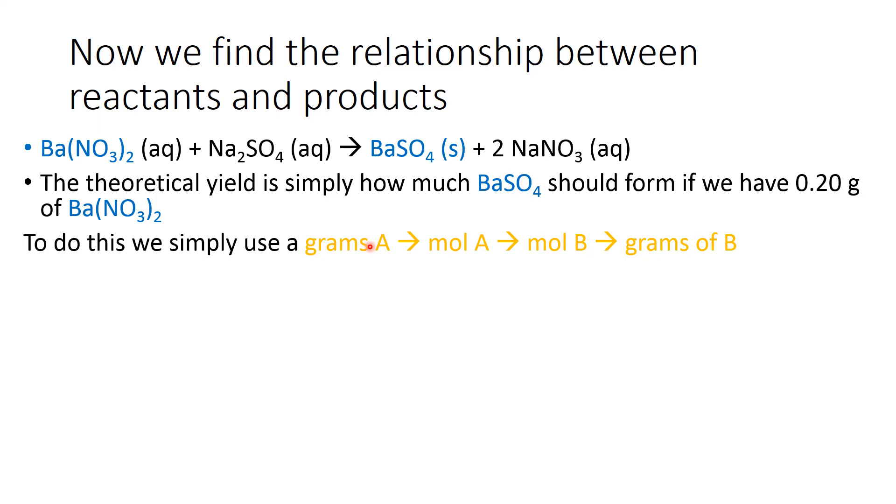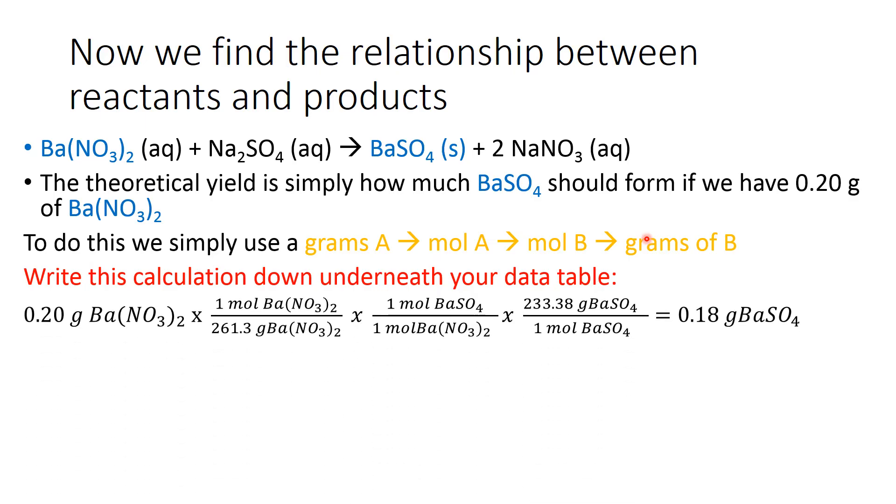We can do that because all we have to do is take that number, 0.20 grams, and use a simple grams of A where A would be barium nitrate, so grams of A to moles of A, and we do that using the periodic table. Then moles of A to moles of B, where B of course would be barium sulfate. We'd use the balanced equation coefficients and then again use the periodic table to go back to grams of B. So we can do this, no problem. We've been practicing this. Go ahead and write this calculation down underneath your data table. You're going to need this later.